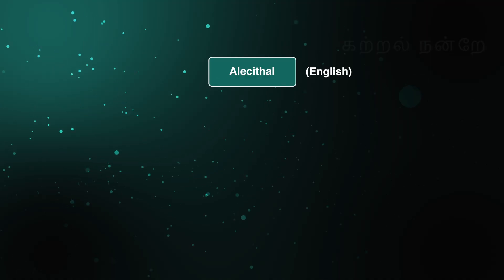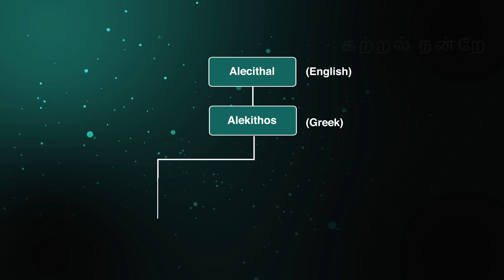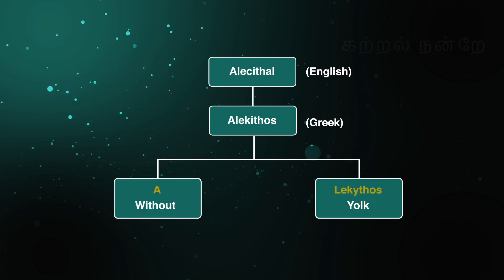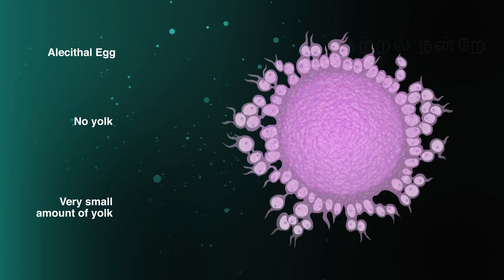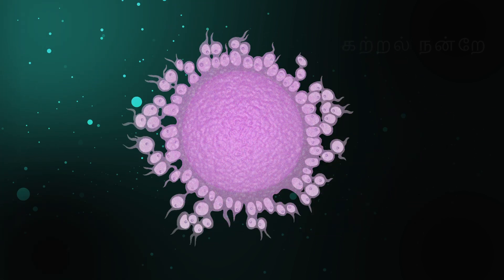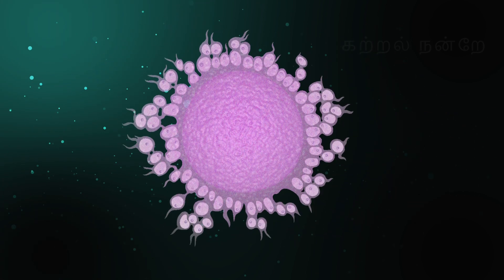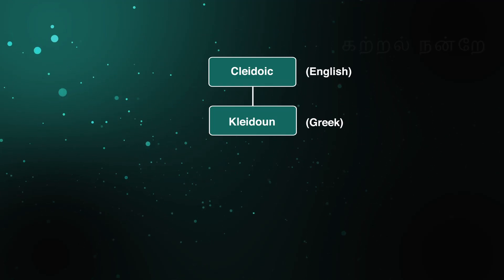The term alecithal is derived from the Greek word alakithos, where 'a' means without and 'lekithos' means yolk. An alecithal egg is an egg that has no yolk or only a very small amount of yolk in the cytoplasm. In the human ovum too, the yolk is present in negligible amounts.